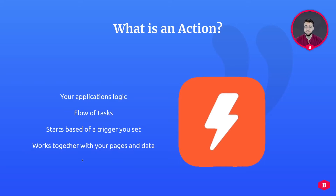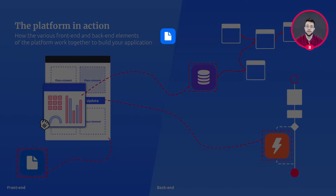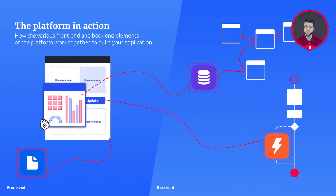An example of this would be: I fill in some information, press the sign up button on a website, and I will receive an email saying I have signed up. Actions almost always work together with your data model. Whenever a button is clicked, data might need to change or an email needs to be sent. The action then talks to your data model to let it know that a data change is requested, or uses the user's information to send an email on their behalf — all according to the way you have created the action.